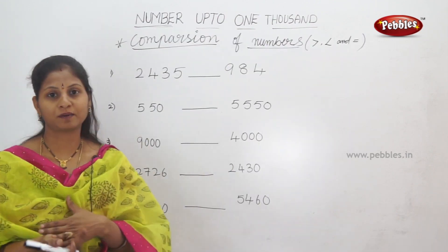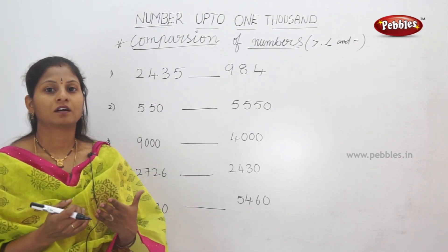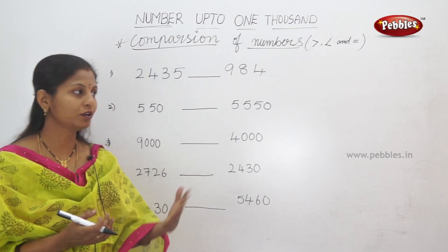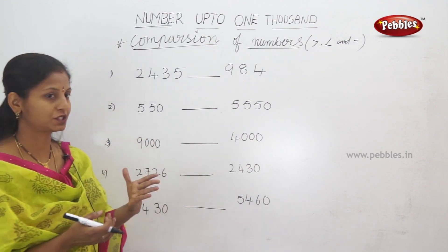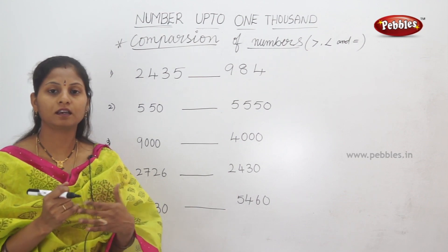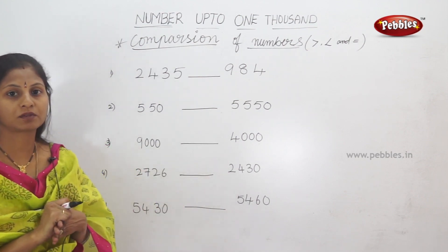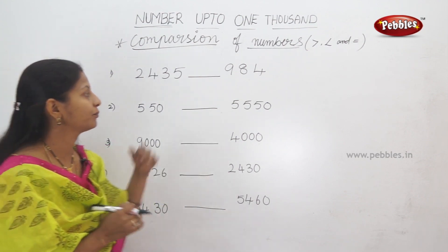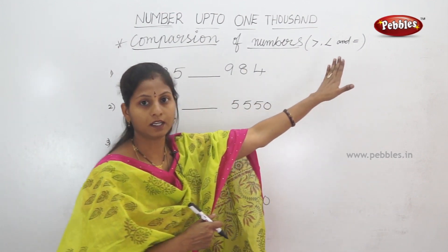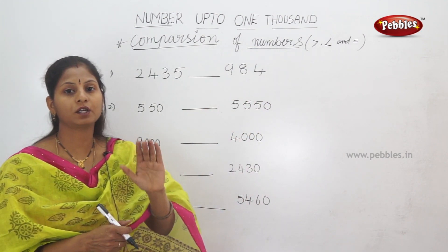Comparison of four-digit numbers. So, three-digit numbers compare. Four-digit numbers compare. The numbers will be bigger and smaller. Remember: greater than, less than, equal — these symbols.